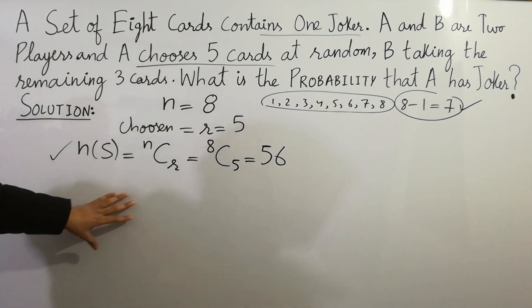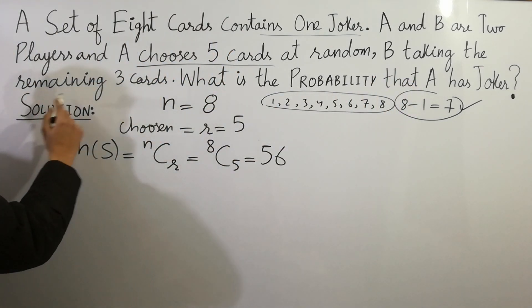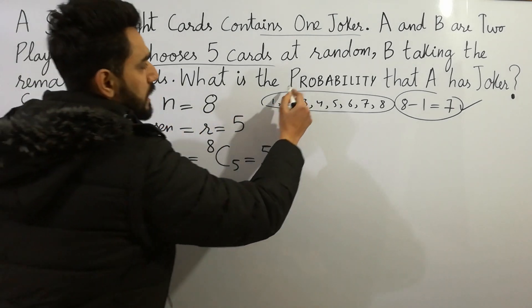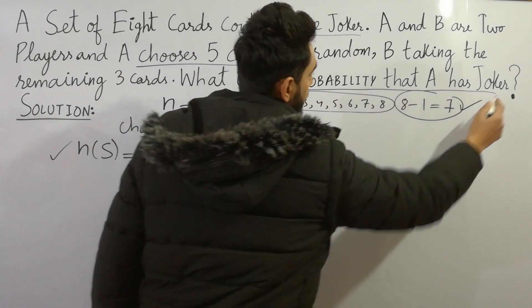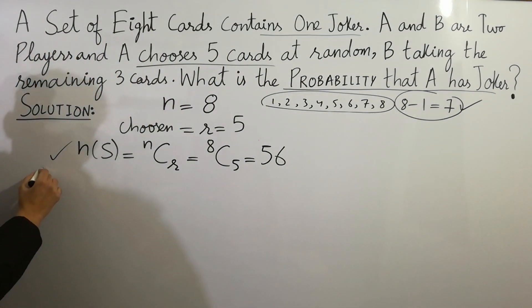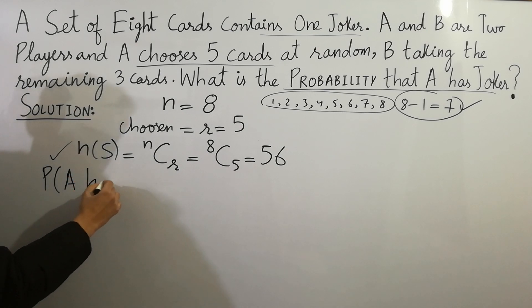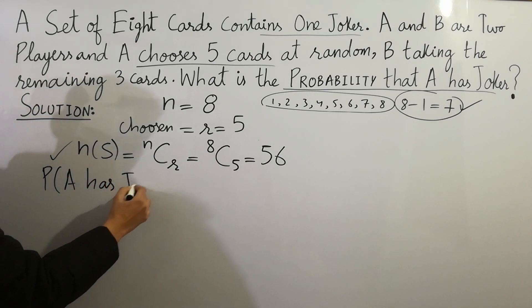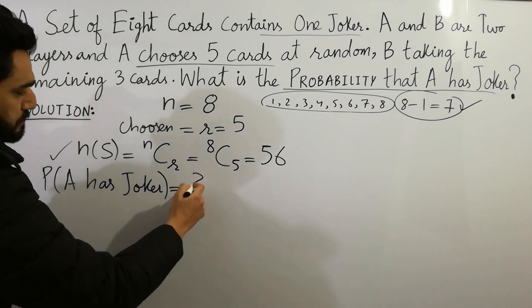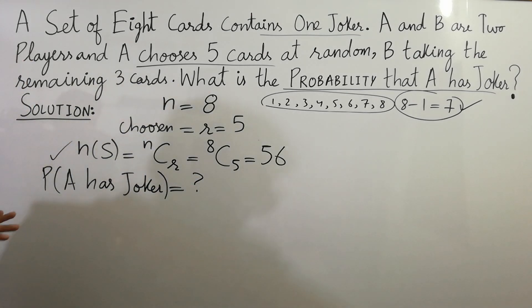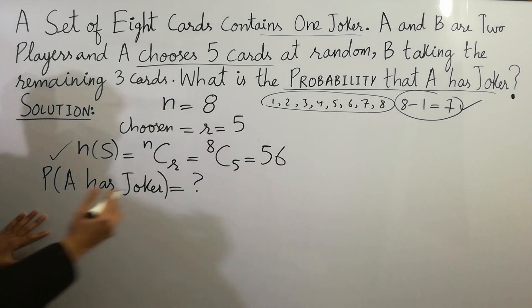The next step is that B takes the remaining three cards. The most important point is: what is the probability that A has the joker? You have to calculate this probability.